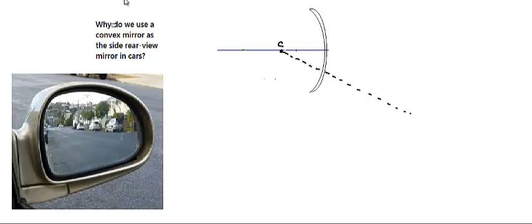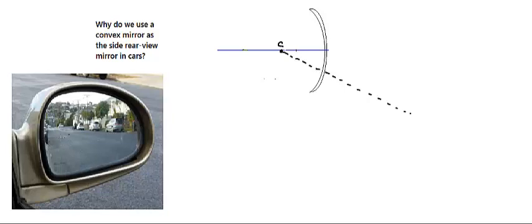In this video we are trying to understand why we use a convex mirror as the side mirror of cars. Here I've shown a side mirror, and if you look at it closely and move your hand around it, you'll find that it is bulging outwards — it's a convex mirror. We'll try to look at the ray diagram and see the reason for that.